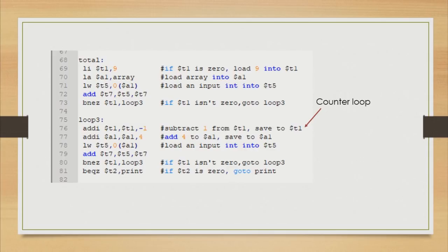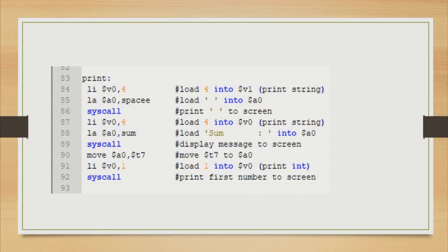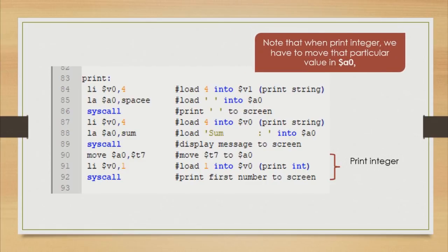And we need to add 4 to register A1 and save to the same name register as A1, then we load input integer into register T5. And we meet again with the condition if register T1 is not equal to 0 we need to go to loop 3 back. And if the value of register T2 is equal to 0 we go to the print function. We move to print function in line 84 until line 88 is the code to print the string. As we store the cumulative value in register T7 we move that particular value in register A0 and print into the console. Please be note that when print integer we have to move that particular value in register A0.